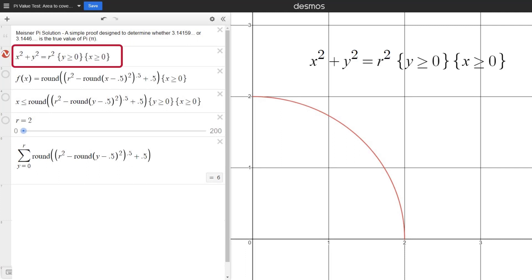This first formula creates the quarter circle in red, based on the circle's formula, x squared plus y squared equals r squared.